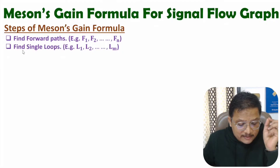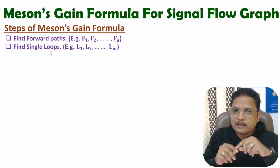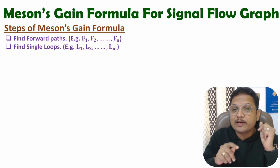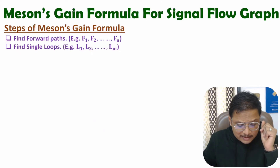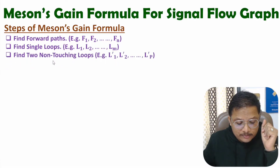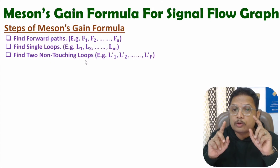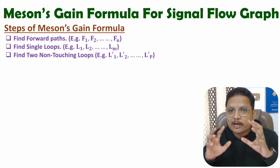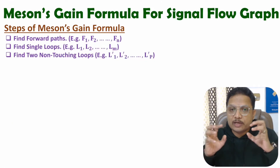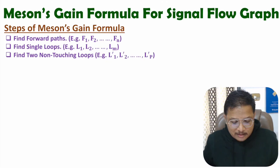After that, we need to find single loops. So in a signal flow graph, the second step is identification of single loops. Let us name them as L1, L2, and so on. After that, we need to identify two non-touching loops. So in the third step, we will be identifying loops which are not touching each other. Let us name them as L1 dash, L2 dash, and so on.